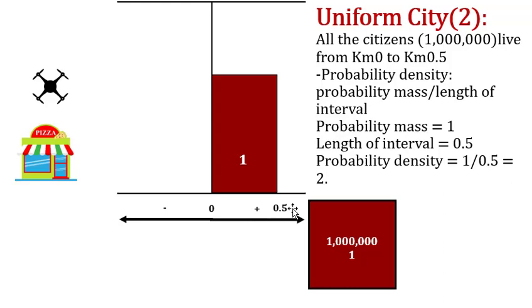Let's calculate the density. The probability mass is 1 because all the people live in that area. The length of the interval is 0.5 instead of 20. So the probability density is 1 divided by 0.5, which equals 2. The probability density of this interval is 2.